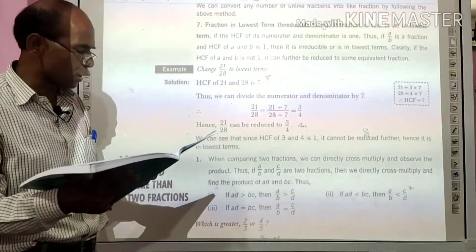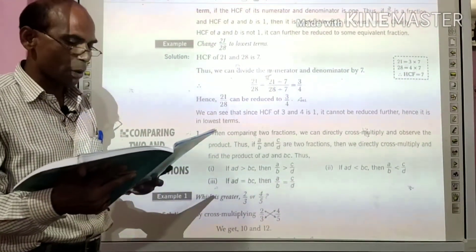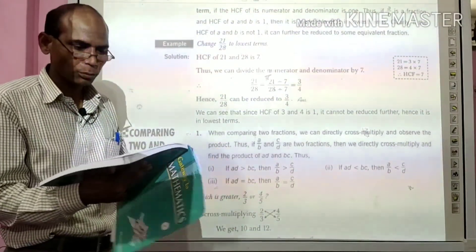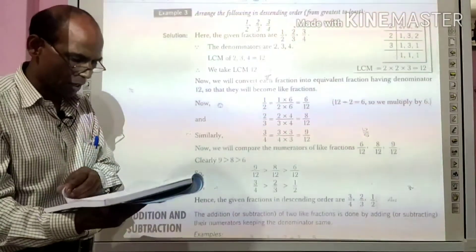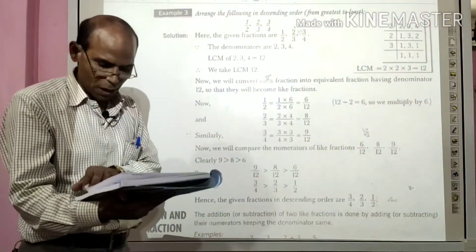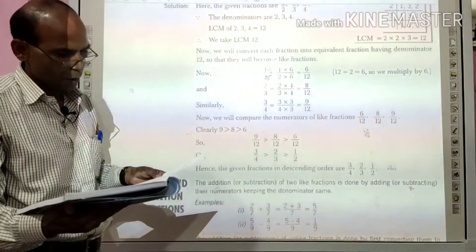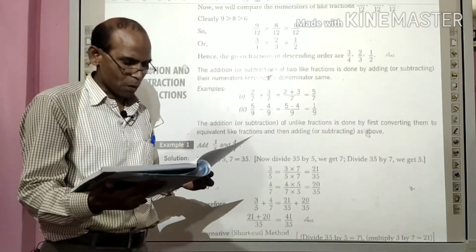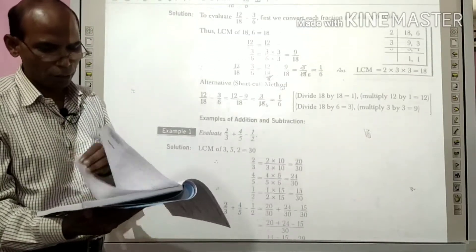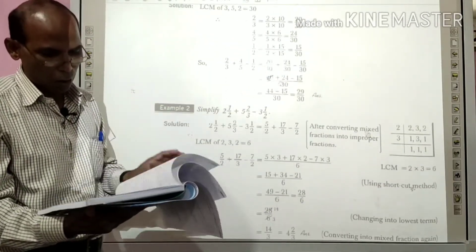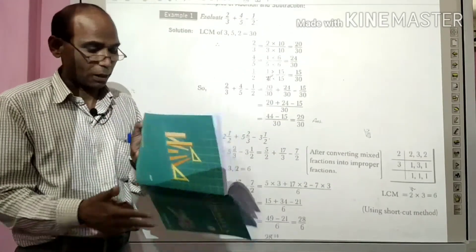जैसे example में आपको दिया हुआ है, दो और दो से अधिक भिन्न को कैसे compare किया जाता है, example दिया हुआ page number 24 में 1 और 2. ठीक उसी प्रकार example 3 में ascending और descending के बारे में बताया गया है. Add और subtract आप पिछले class में पढ़े हुए हैं, example में भी आपको समझाया हुआ है. Example का help लेकर exercise 2A, 2B, 2C और review exercise आप complete करके रखिएगा.